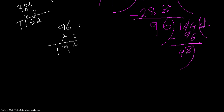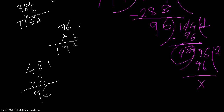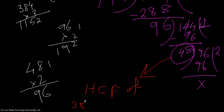I take this remainder, 48, as my next divisor and divide 96 by it. 48 into 2 is 96, so I get 96 with no remainder left. This last divisor, 48, is the HCF. The HCF of 384 and 1296 is 48.